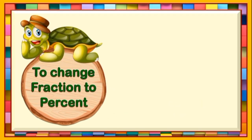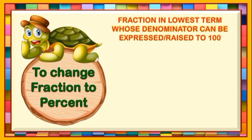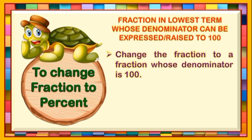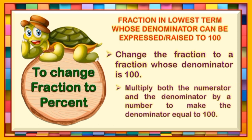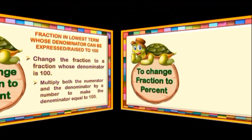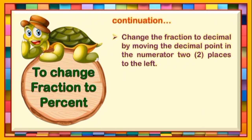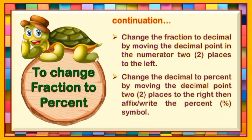The second way in changing a fraction to percent is when the fraction is in lowest term and whose denominator can be expressed or raised to 100. We follow these steps. First, change the fraction to a fraction whose denominator is 100 by multiplying both the numerator and the denominator by a number to make the denominator equal to 100. The second step is to change the fraction to decimal by moving the decimal point in the numerator two places to the left. The third step is to change the decimal to percent by moving the decimal point two places to the right, then affix or write the percent symbol. Let us put this into an example.